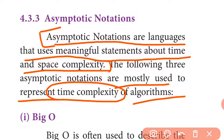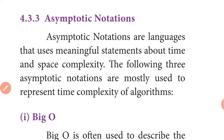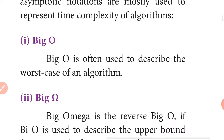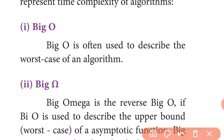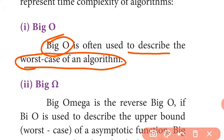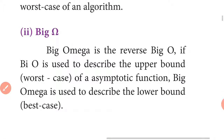The three asymptotic notations are: Big O, Big Omega, and Theta. Big O notation is often used to describe the worst case of an algorithm. These notations represent the upper bound, lower bound, and average case respectively.